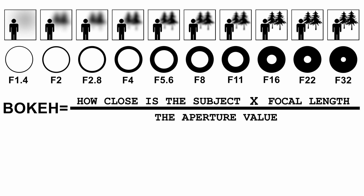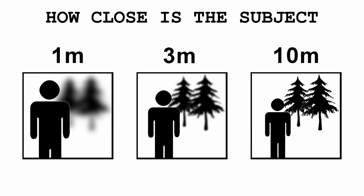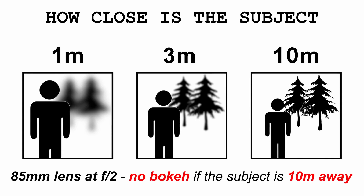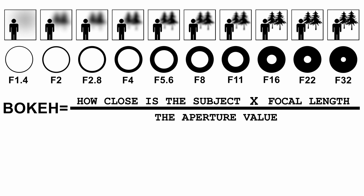This is the formula. Let's start with the first aspect: how close is the subject? As we can see in these images, the more we get closer to our subject, the more bokeh we get. As soon as we move away from our subject, bokeh starts to disappear. So even if we have a good 85mm lens set at f2, there will be no bokeh if the subject is 10 meters away from us. If we want a smooth blurry background, we also have to get closer.